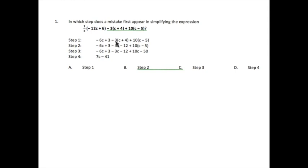Now we're going to get to distribute the negative 3. Negative 3 times C, negative 3C. Negative 3 times 4, negative 12. And they left everything at last the same.